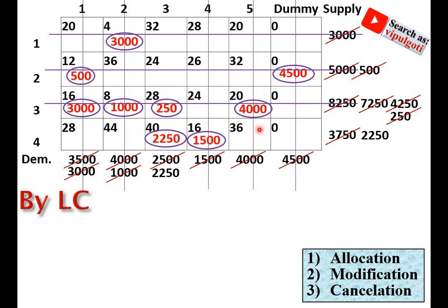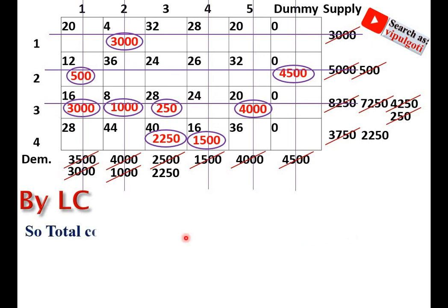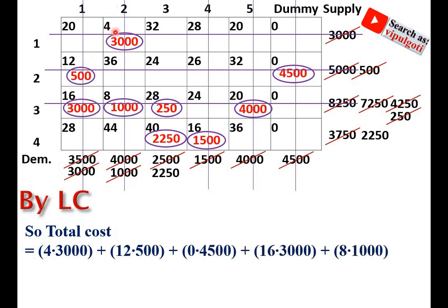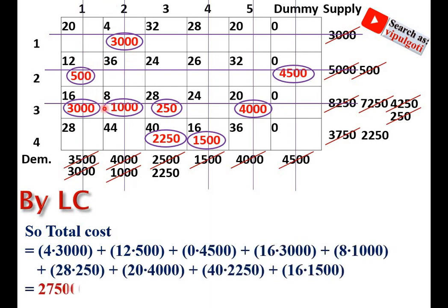It is very simple logic — the name itself indicates least cost, so you select the route with the least cost value and repeat the step. The total cost is calculated as: (4 × 3000) + (12 × 500) + (0 × 4500) + (16 × 3000) + (8 × 1000) + (28 × 250) + (20 × 4000) + (40 × 2250) + (16 × 1500), which gives a total of 2,75,000 rupees.